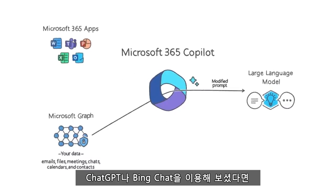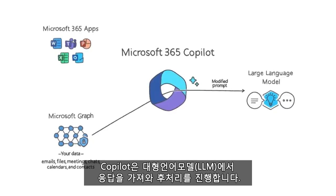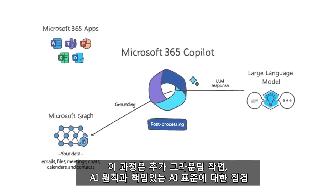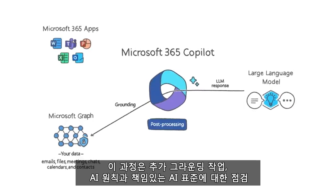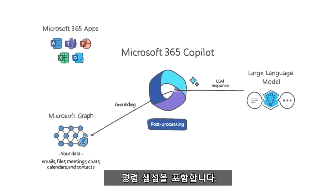You may be familiar with what an LLM can do based on your experience with ChatGPT or Bing Chat. Copilot takes the response from the LLM and post-processes it. This post-processing includes additional grounding calls to the graph, responsible AI checks, security, compliance and privacy reviews, and command generation.